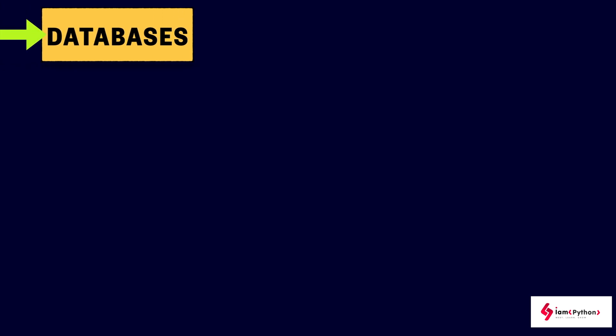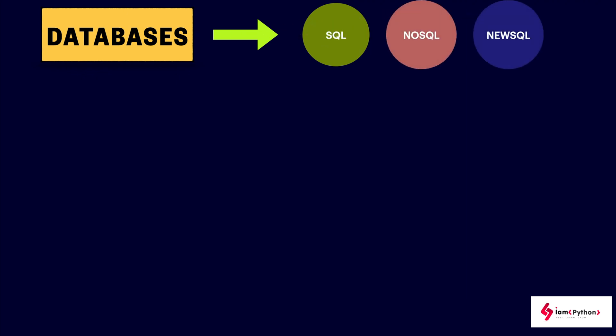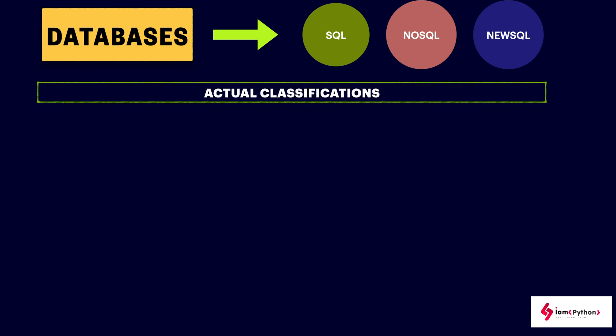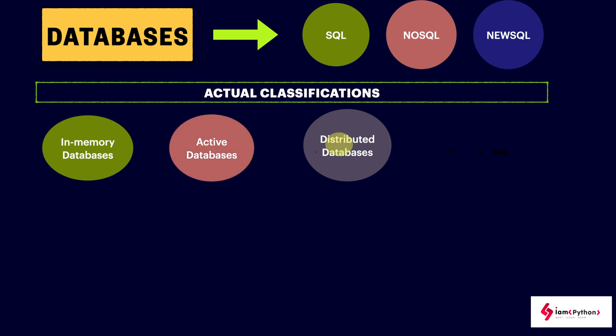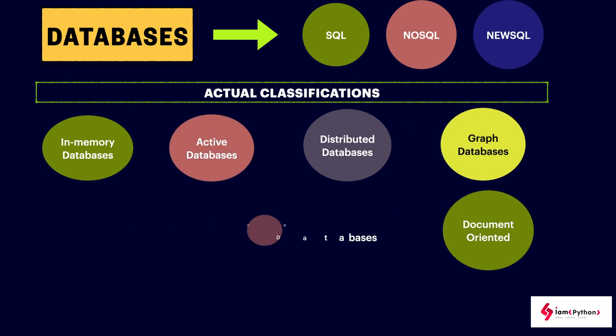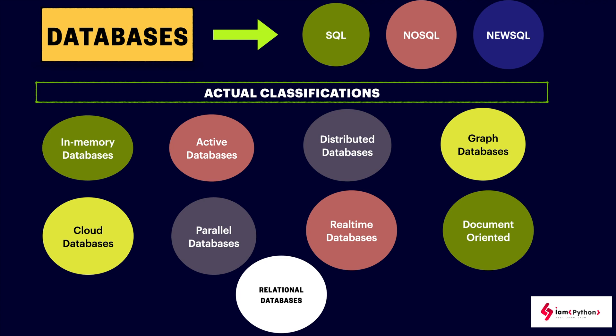There are various databases to be aware of. Classifications include in-memory databases, distributed databases, active databases, graph databases, document-oriented databases, real-time databases, cloud databases, parallel databases, and most importantly relational databases — where we use structured query language. As a data engineer, you should have minimum knowledge of these database types, as we deal with large amounts of data in various formats.